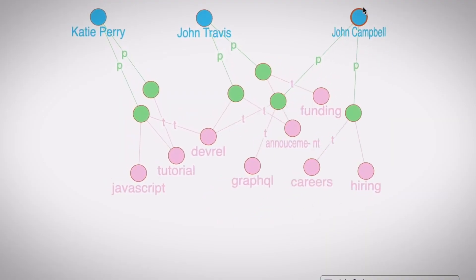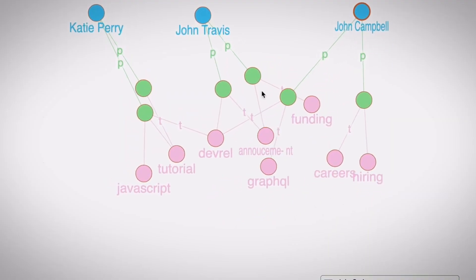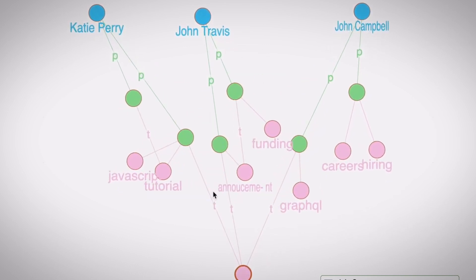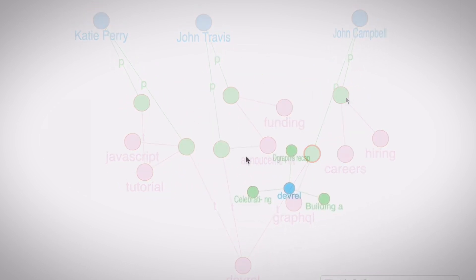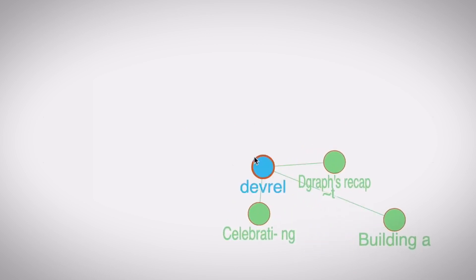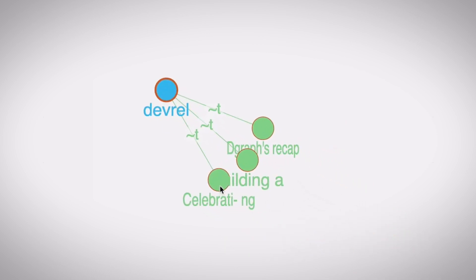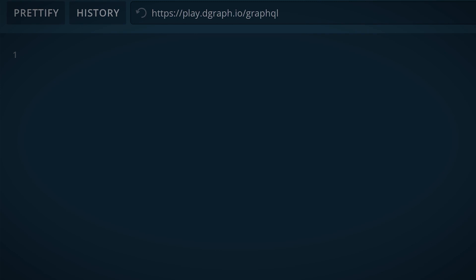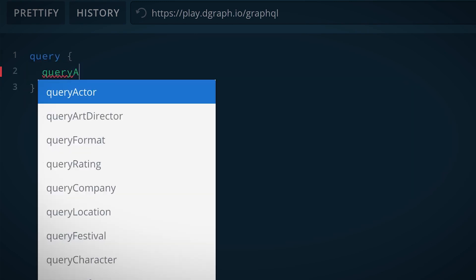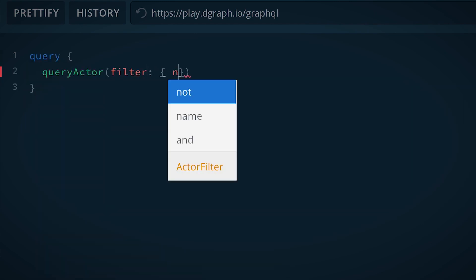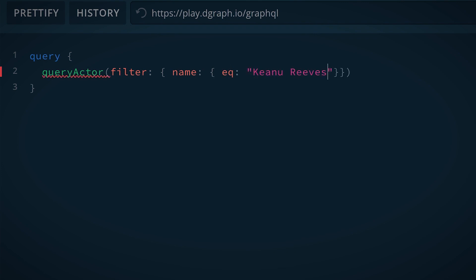D-graph is quite unique in its approach. D-graph is a hybrid between a search engine and a graph database, while marrying the guarantees provided by a distributed database like Spanner in terms of transactions and consistency. And it is the only database to provide native GraphQL execution, which makes it very easy for developers to build their apps upon it.